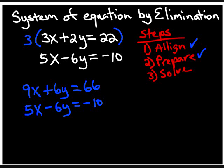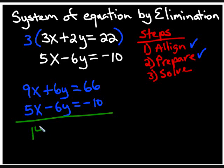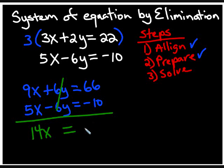Now, since we're ready to do the third step — solve — we place a line underneath, meaning we're going to combine. When we combine 9x and 5x we get 14x. The positive 6y and the minus 6y cancel out. That leaves us equal to 66 minus 10, which is 56.